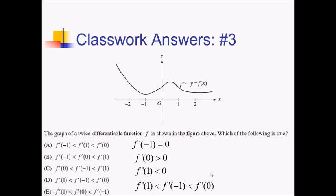Let's carefully pick this out of the answer choices. We're starting with f prime of 1 — that's going to be d or e — and then we want negative 1 next, so that's going to be choice D.